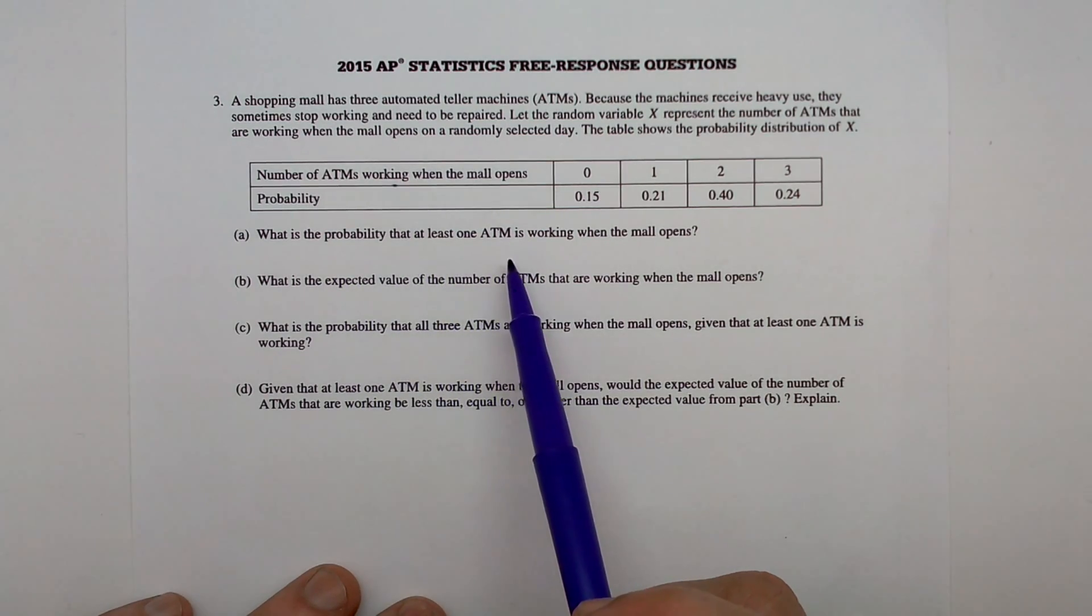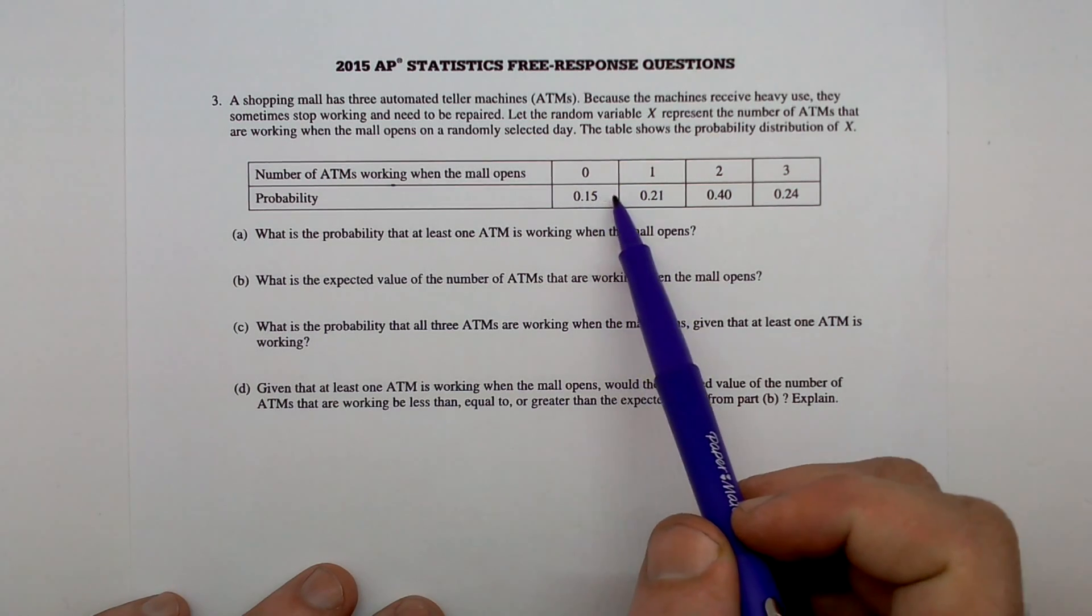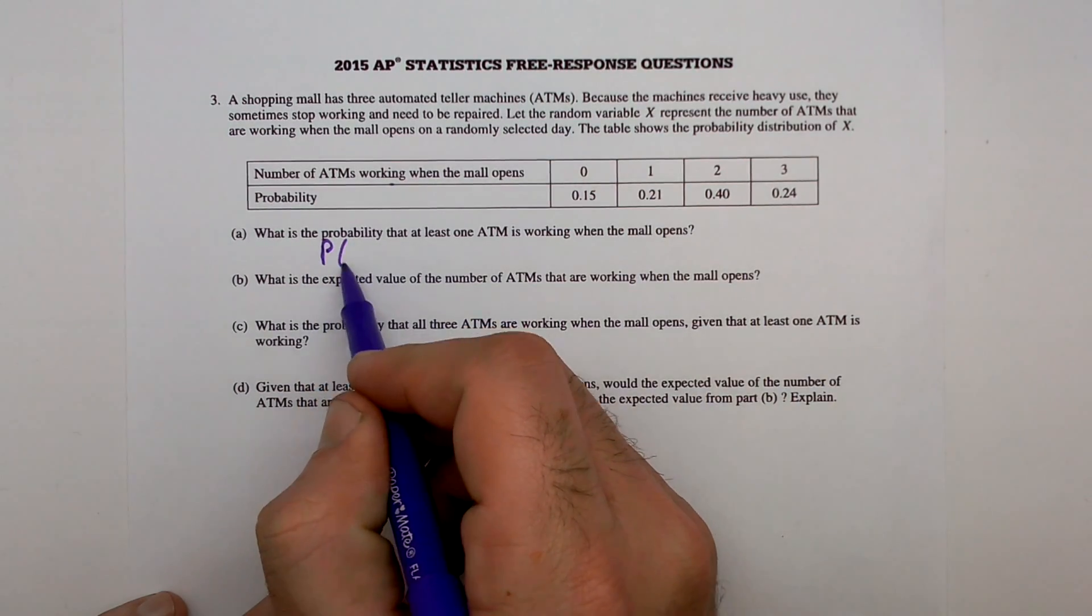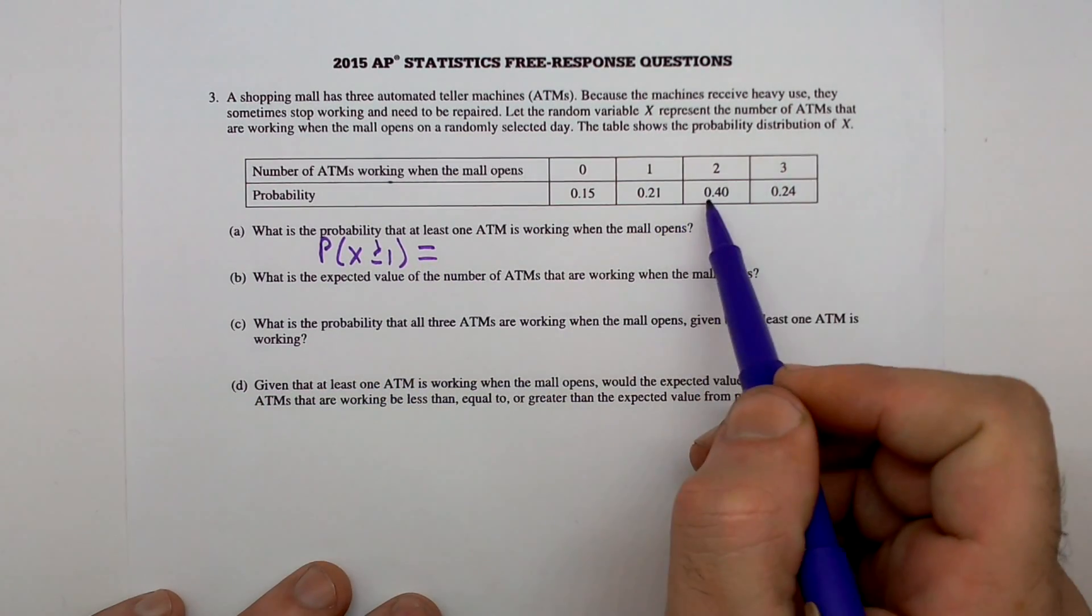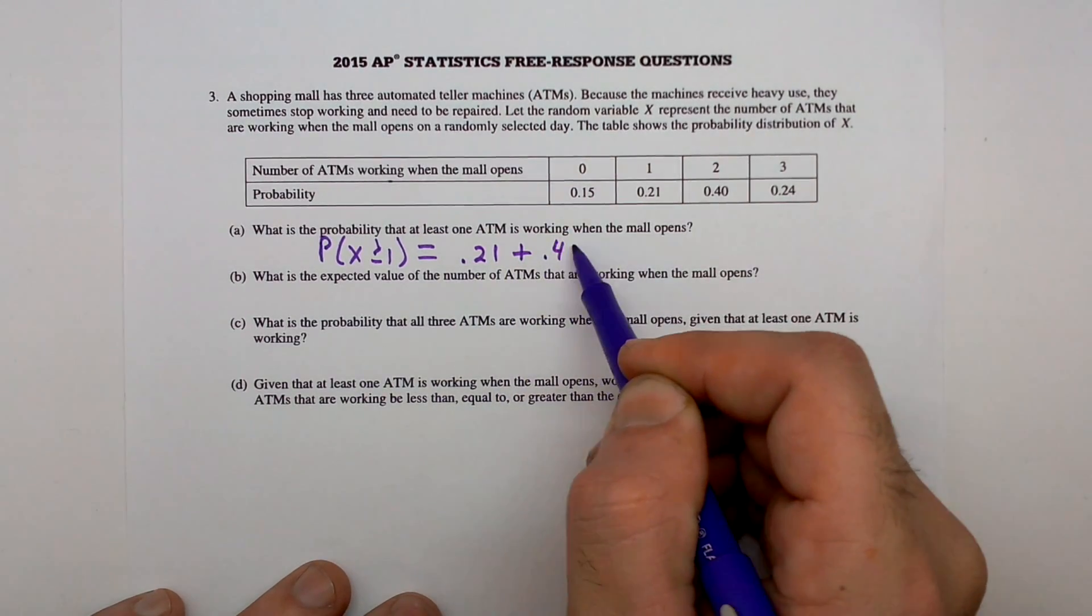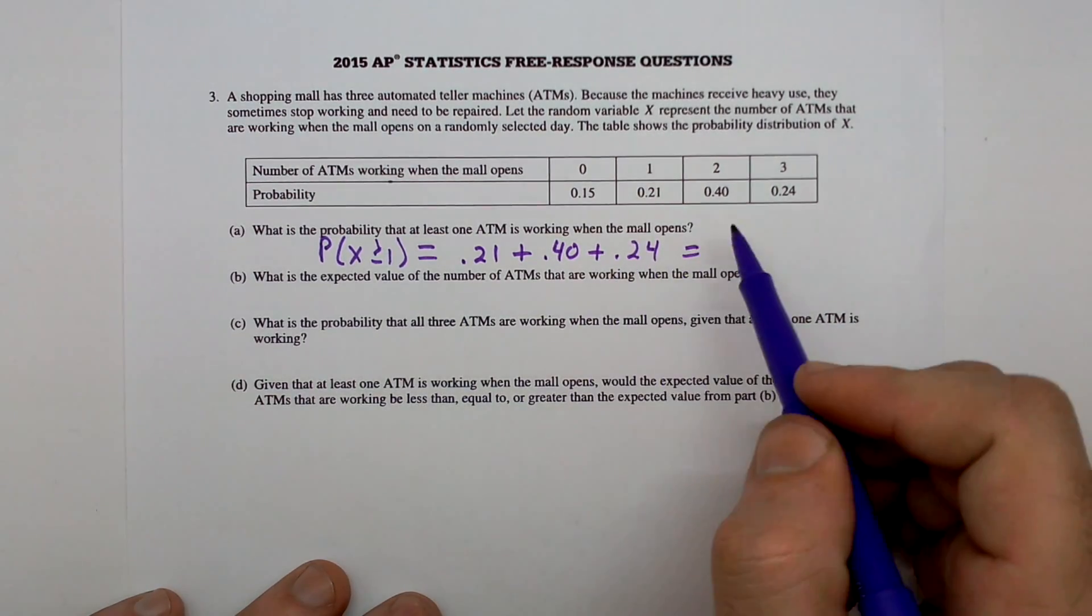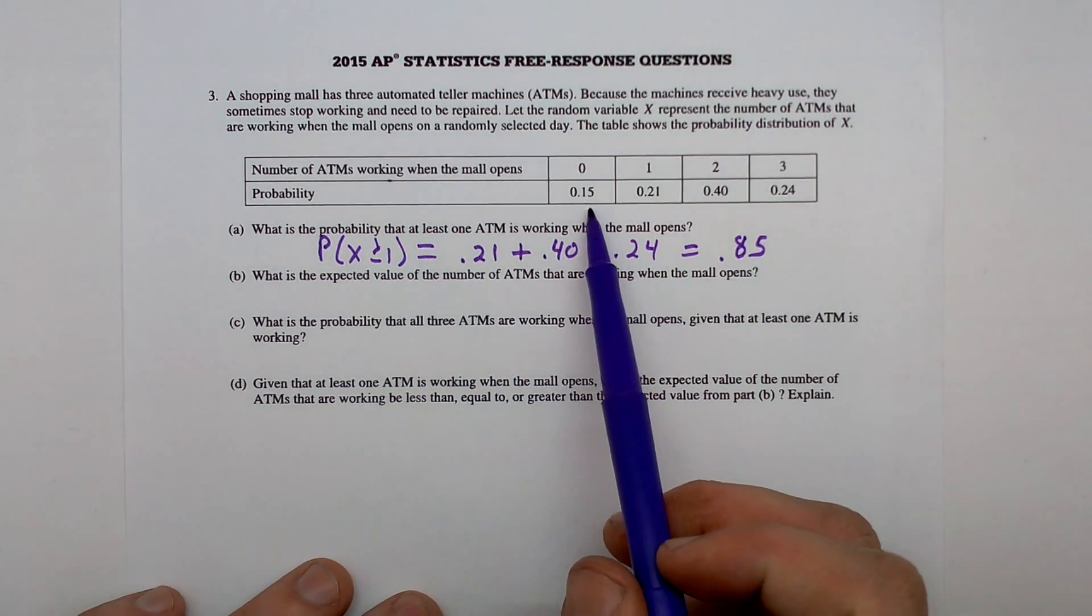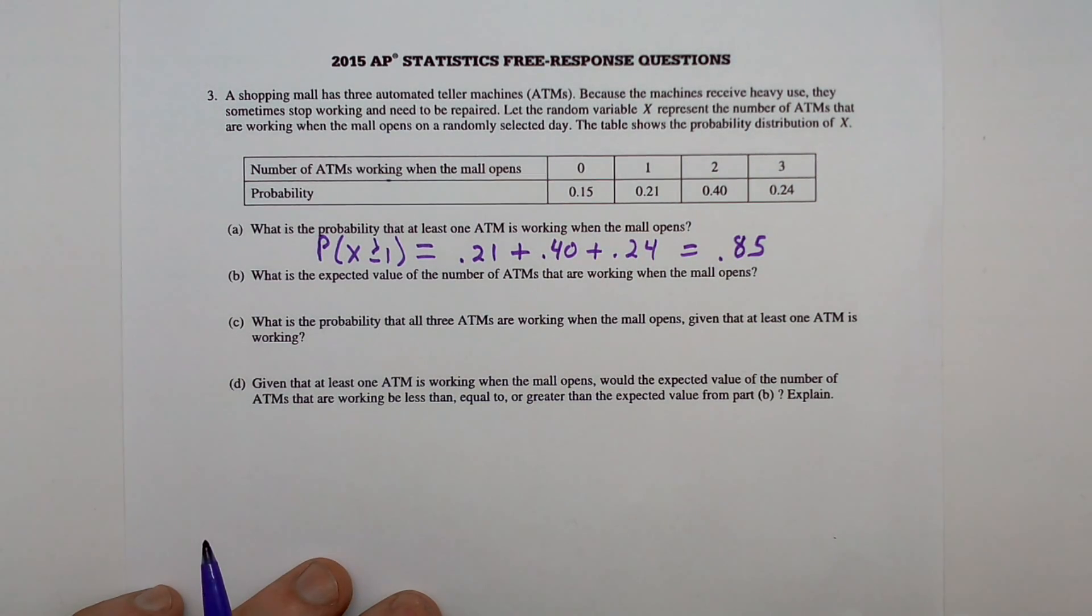What is the probability that at least one ATM is working when the mall opens? Well, this is the zero ATM situation and the rest of these would be one or more. So the probability that X is greater than or equal to one is going to be the sum of these three individual probabilities: 0.21 plus 0.40 plus 0.24, and summing those three numbers is 0.85. Likewise, you could take 1 minus 0.15 and get that 85% chance that at least one of the ATMs is working.